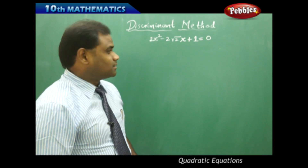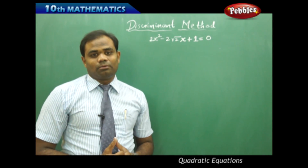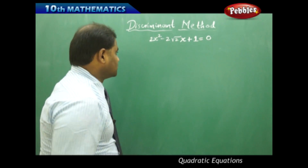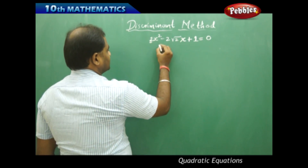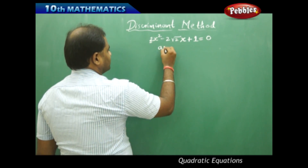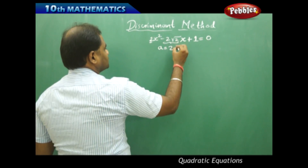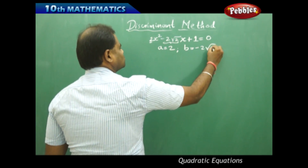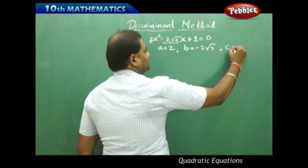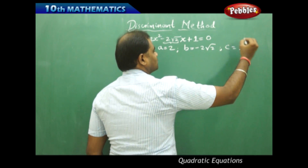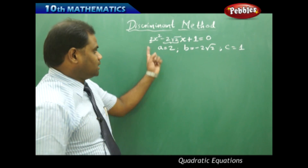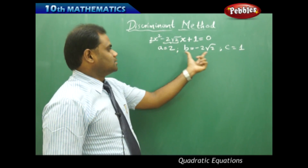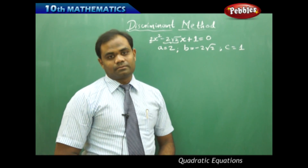Comparing this quadratic equation with the general form ax squared plus bx plus c, we can identify that the value of a is 2, the value of b is minus 2 root 2, and the value of c is 1, corresponding to the coefficients ax squared plus bx plus c respectively.